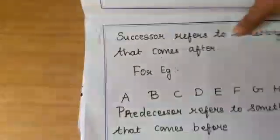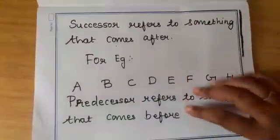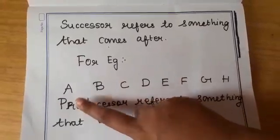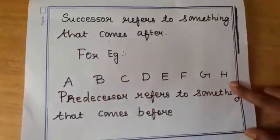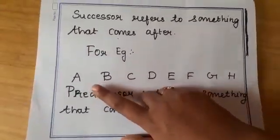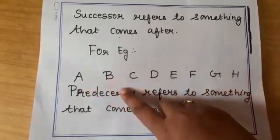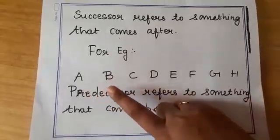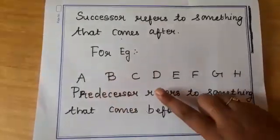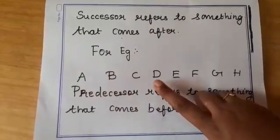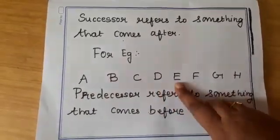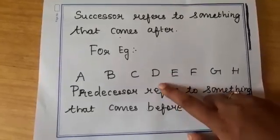Successor refers to something that comes after. For example, I am taking alphabets A to H. So what will be the successor of A? Successor of A will be B because B comes after A. So what will be the successor of D? Successor of D will be E because E comes after D.